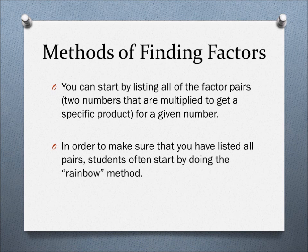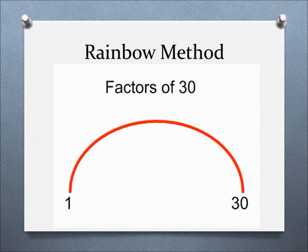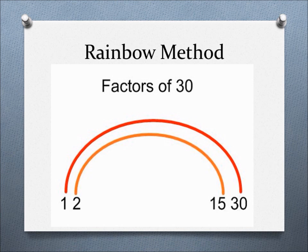The rainbow method starts by listing 1 and what times 1 will give you that number. Then you see if 2 is a factor and if so, what times 2 is a factor of that number.